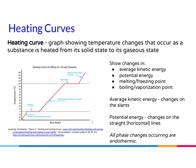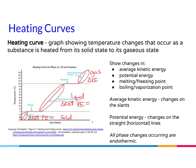Now let's look at a heating curve — a graph showing the temperature changes that occur as a substance is heated from its solid state to its gaseous state. This graph shows us changes in average kinetic energy. On the slants, you have changing kinetic energy and potential energy stays the same. So all slants mean you are in a state of matter — your solid, your liquid, and your gaseous state. Average kinetic energy is increasing; potential energy is staying the same on all slants.